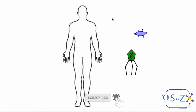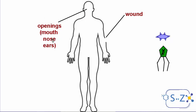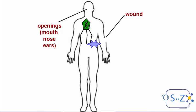We know that if a virus, bacteria, or any other pathogen wants to enter the body, there is some type of wall that prevents these pathogens from entering. But if we have a wound or openings like the mouth, nose, or ears, the body is vulnerable and susceptible to the entrance of pathogens.